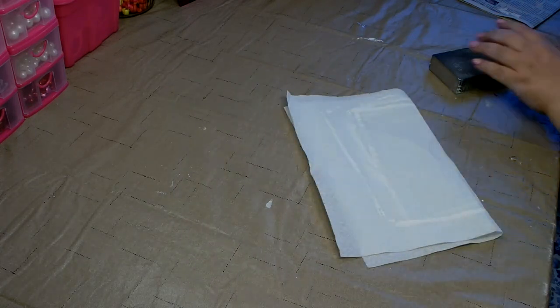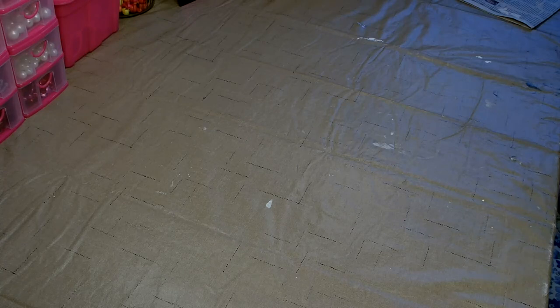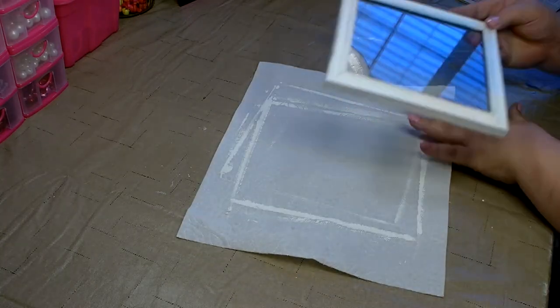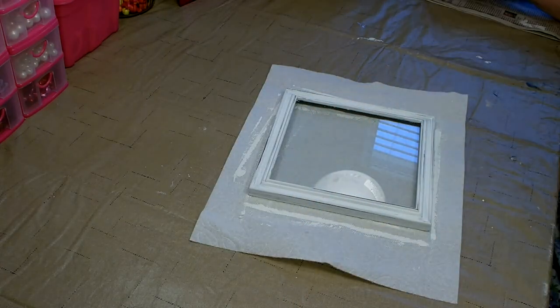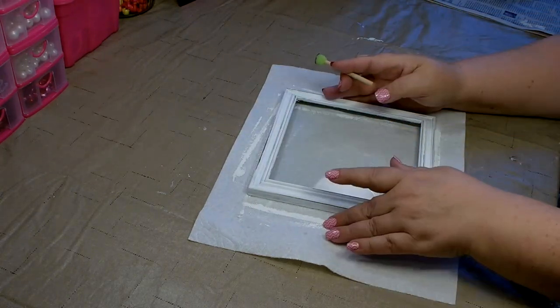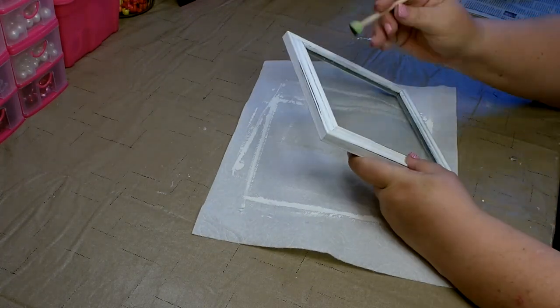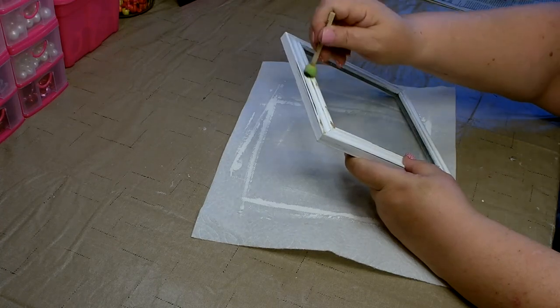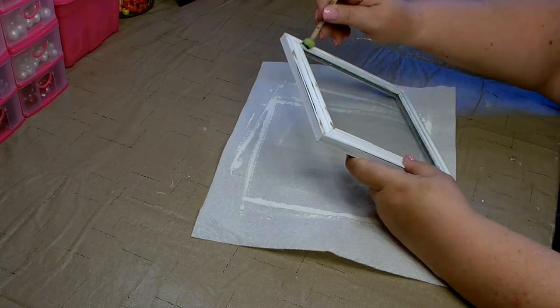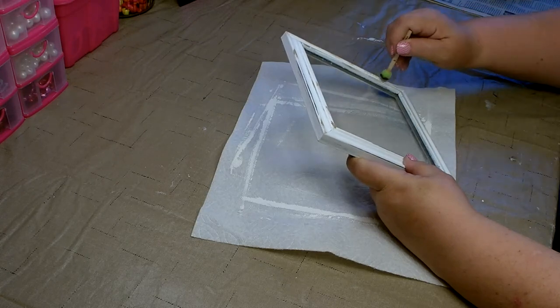Once the frame has been distressed with the sandpaper, you'll want to use some antique wax by Waverly to add a little bit more distressing. I like to use the small pouncing brushes for this effect. Just add a small amount of the antique wax and apply using the dry brush method around the edges until you reach your desired effect.